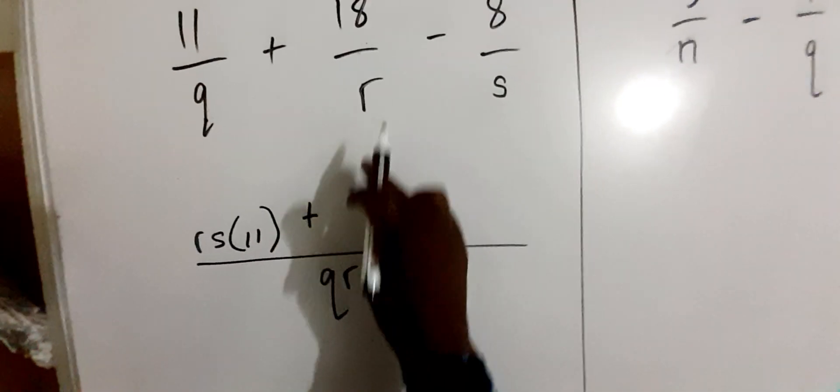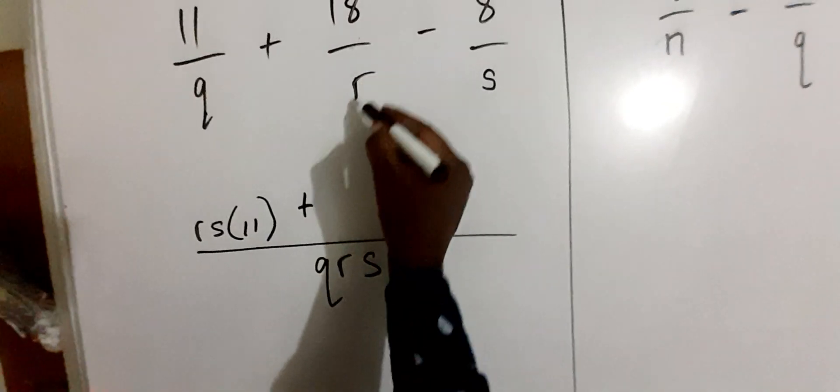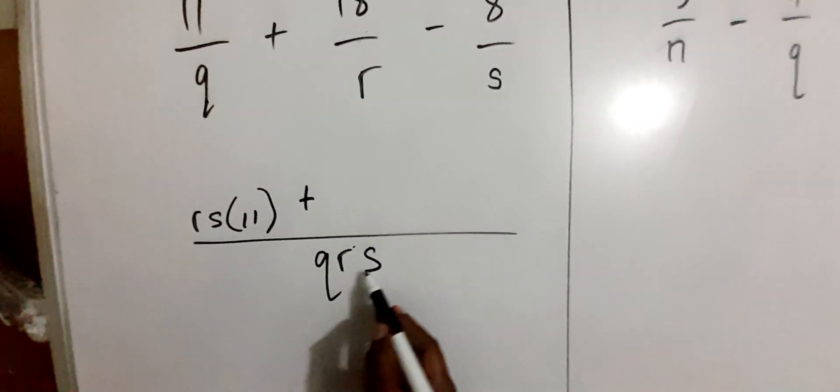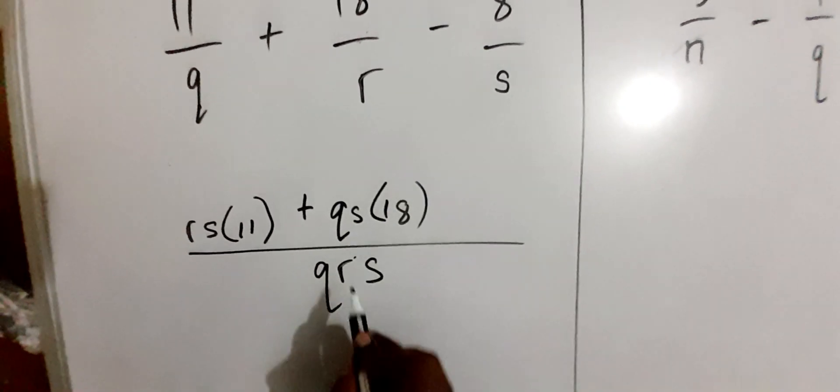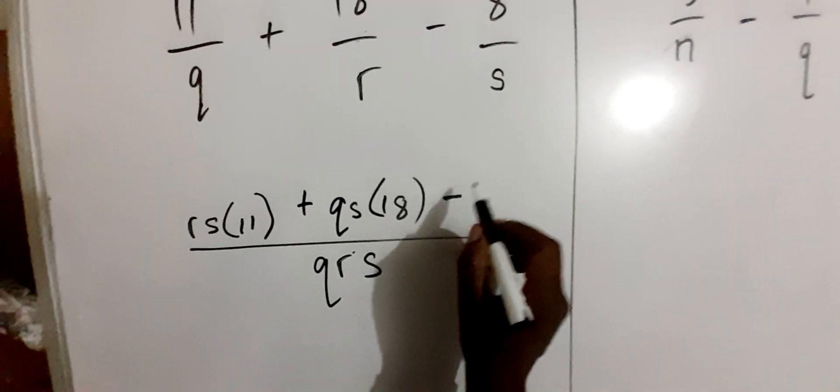Plus R into QRS, the R will cancel with the R, leaving us with QS, multiplied by the numerator, minus